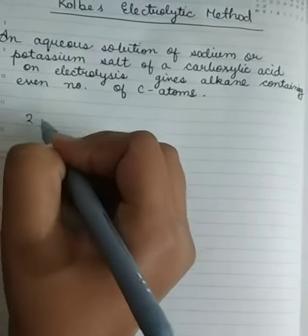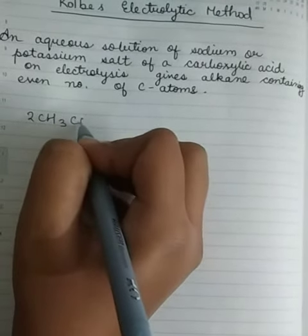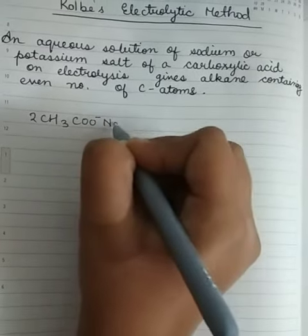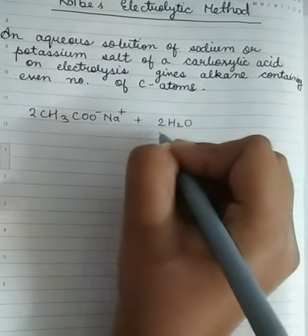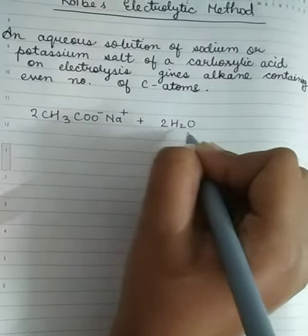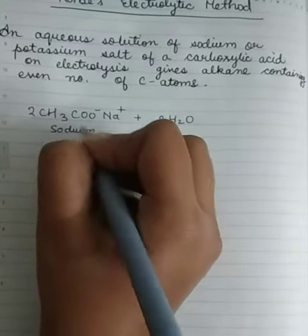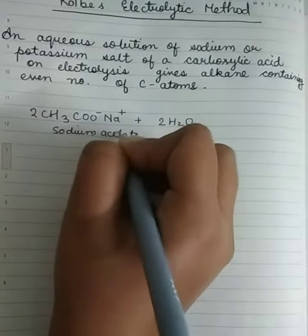If you take 2 moles of CH3COO minus Na plus plus 2 H2O. We take H2O for electrolysis and this is sodium acetate.